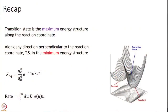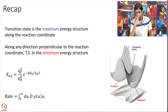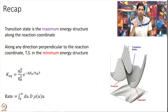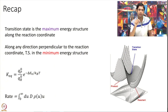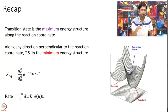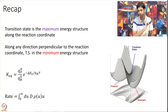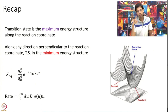A quick recap of several modules: the transition state, as we described two modules ago, is the maximum energy structure along the reaction coordinate. The reaction coordinate is the minimum energy path joining reactants and products. So we go from reactant to product in the minimum energy fashion, and the maximum energy point along this path is called the transition state.